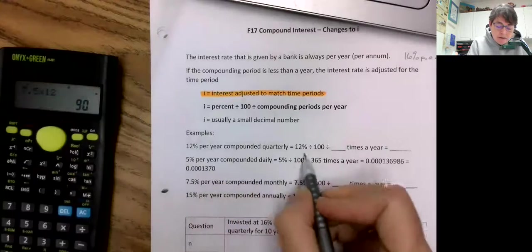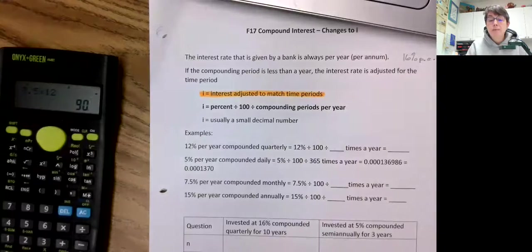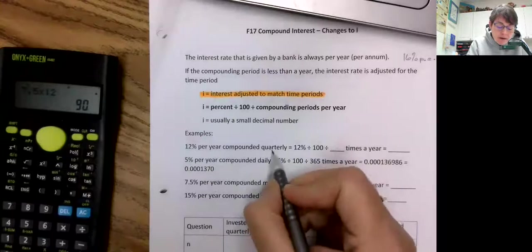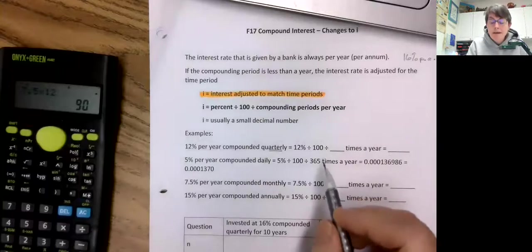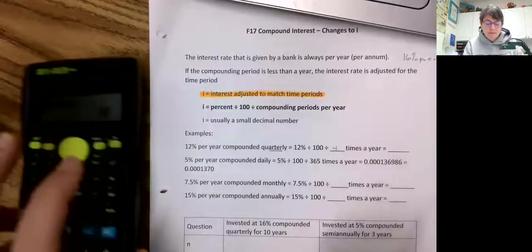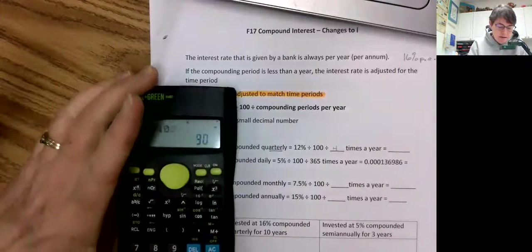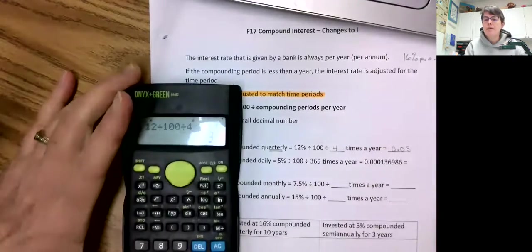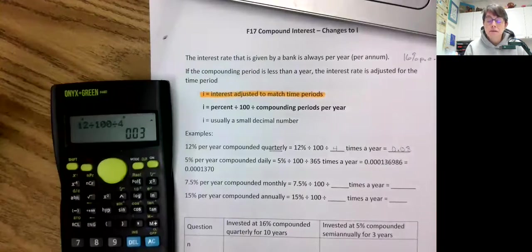All right, so let's look at this. 12% per year compounded quarterly. Here's our formula. It's percent divided by 100 just like before, but we now have to divide by the compounding periods per year. So we have compounded quarterly and we have 12% divided by 100, always divide by 4. So 12 divided by 100 divided by 4 is 0.03. Does that make sense? You have 12% for the full year. We have to divide it up into four chunks because it's only calculated quarterly. That's going to be 3% per year.